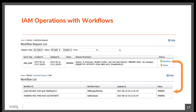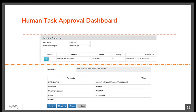IAM operations with workflows can be monitored. An IAM operation can trigger multiple workflow processes and each of them can be monitored individually. Each individual workflow has to be completed successfully in order for the IAM operation to be persisted. IAM operations waiting on a workflow completion event can be deleted before getting persisted in the system. Users who are in the capacity of approving or denying IAM operations can login to the user portal, go to pending approvals, and see all the workflows waiting on their approval. The user can select a workflow and approve or deny it.